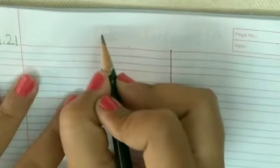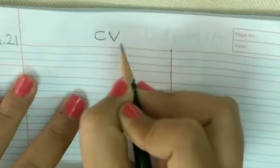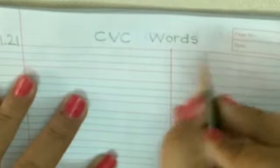Children, now we will write CVC words in our notebook. Today's date is 30.01.21. We will write CVC words over here: C-V-C W-O-R-D-S, CVC words.